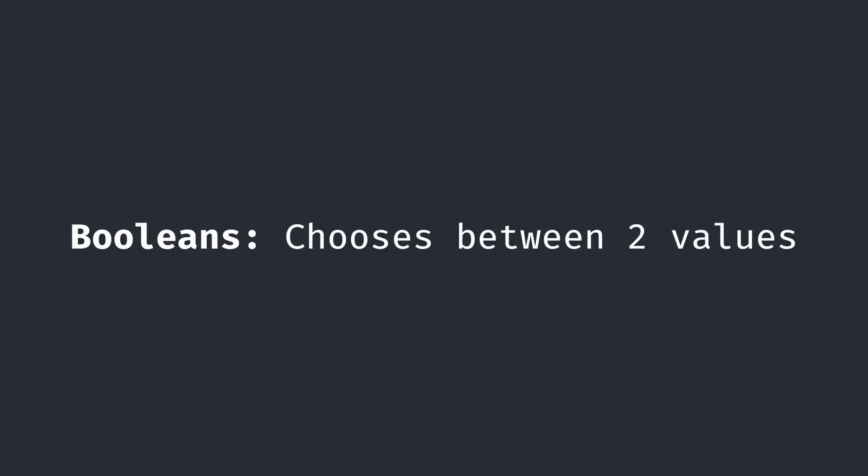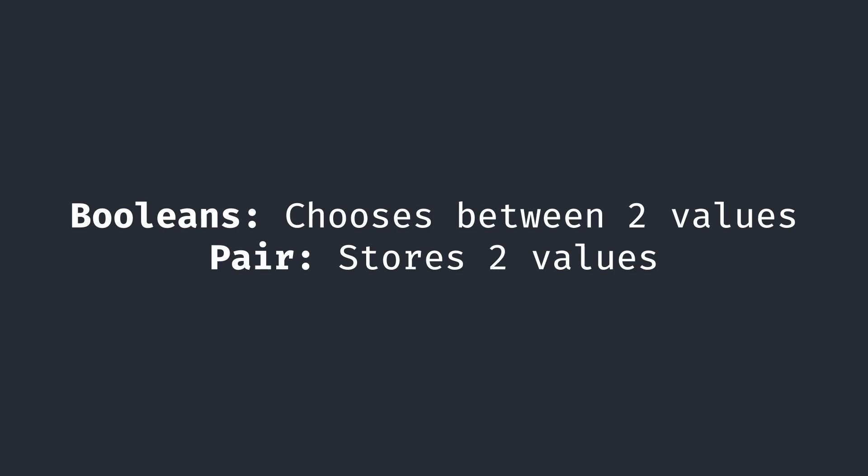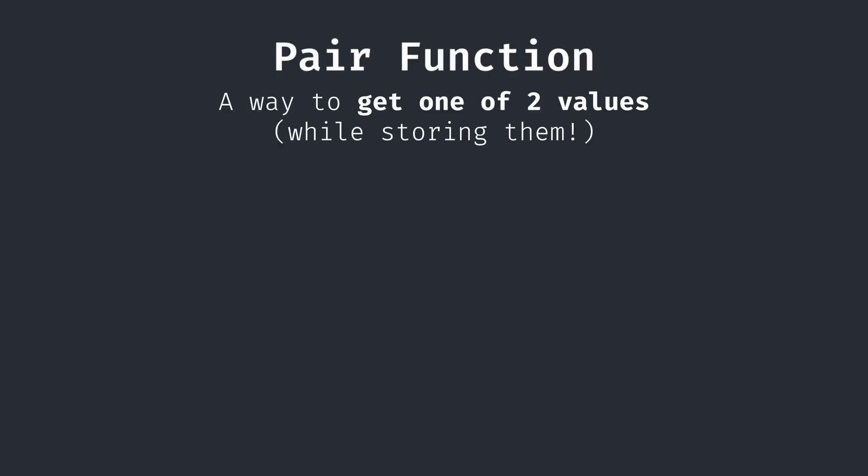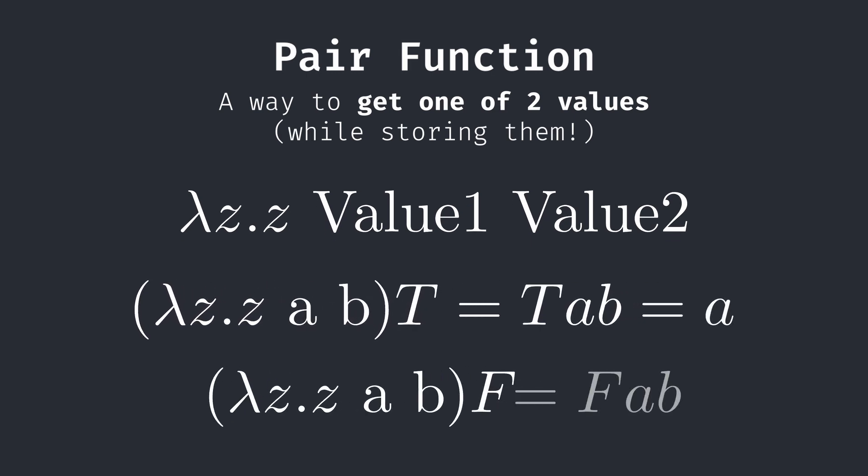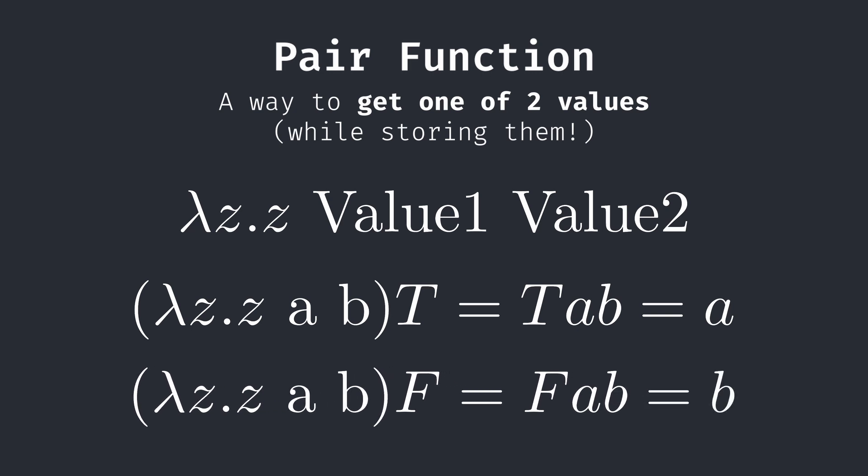Knowing that booleans choose between two values, a pair data type can be easily derived. Consider the pair function as a way to obtain one of the two values stored instead of just storing them. All it does is take a boolean as input and applies it to two stored values. When the input is true, the first value is chosen. When it is false, the second is chosen. The NOT and even AND or OR functions can be interpreted as accessing elements in a pair.